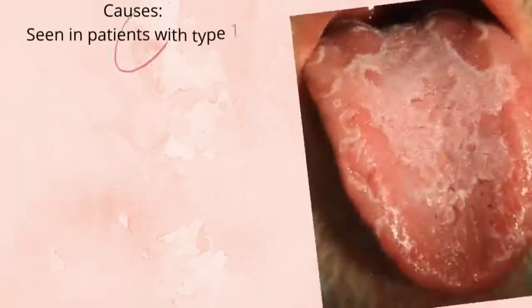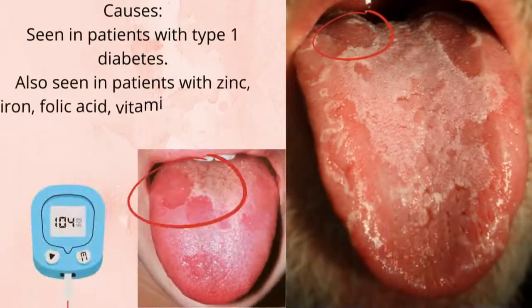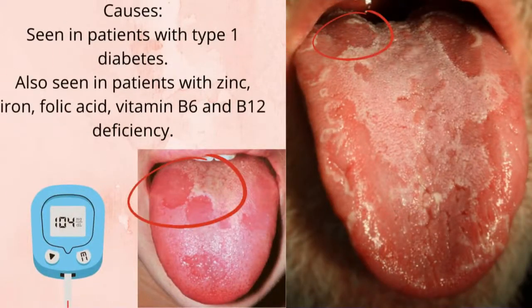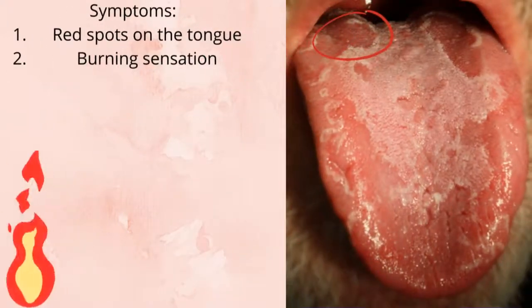The causes: it's mostly seen in patients with type 1 diabetes. It can also be seen in patients with zinc, iron, folic acid, vitamin B6, or vitamin B12 deficiency.